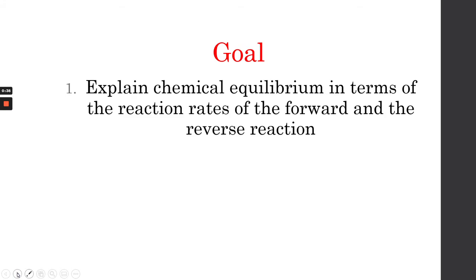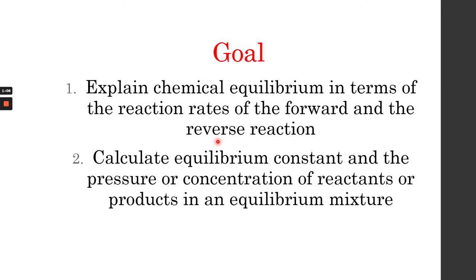At the end of this lesson, I want everyone to be able to explain chemical equilibrium in terms of the reaction rates of the forward and the reverse reaction. We have talked about this in our previous discussion, so we are going to revisit it briefly. We also want to be able to calculate the equilibrium constant in terms of pressure. Today we are talking about the pressure of the reactants or products in an equilibrium mixture, and then we'll discuss the difference between Kc and Kp.